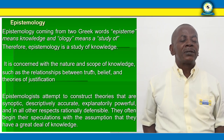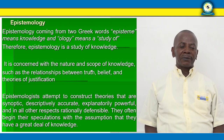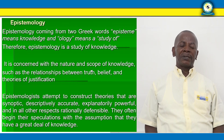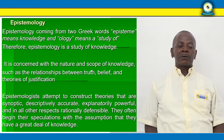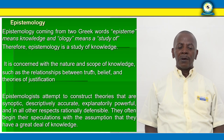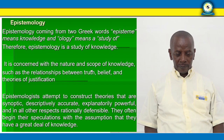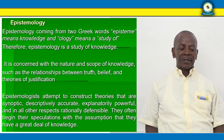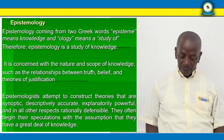The second branch is called epistemology, coming from the Greek word episteme meaning knowledge, and -ology meaning study of. Therefore, epistemology is the study of knowledge. It is concerned with the nature and scope of knowledge, such as the relationship between truth, belief, and theories of justification. Epistemologists attempt to construct theories that are synoptic, accurate, explanatory, powerful, and in all other respects rational and defensible. They often begin their speculations with the assumption that they have a great deal of knowledge.